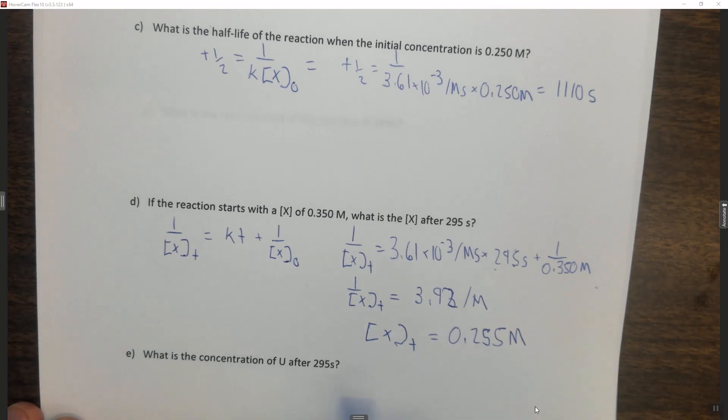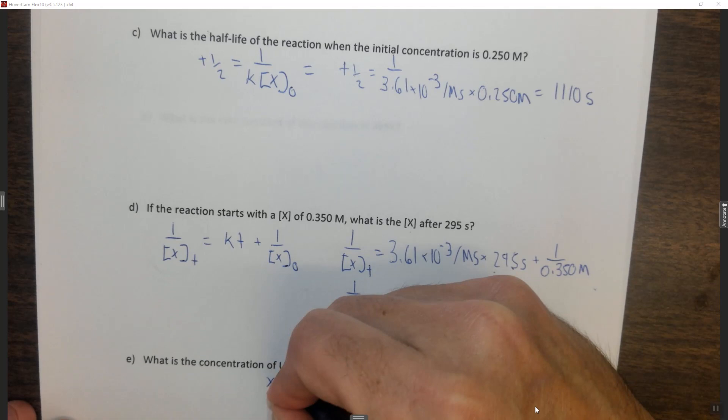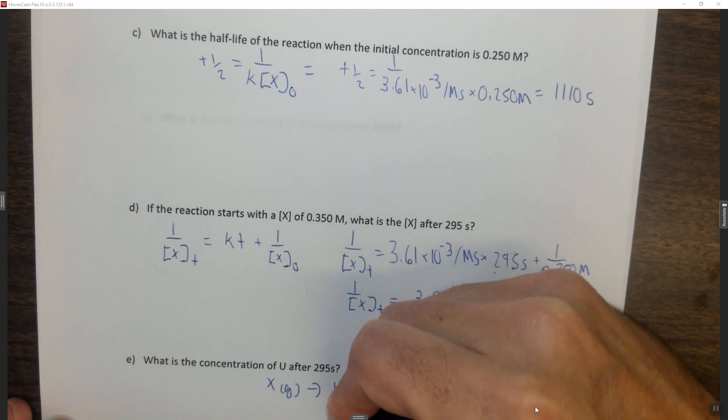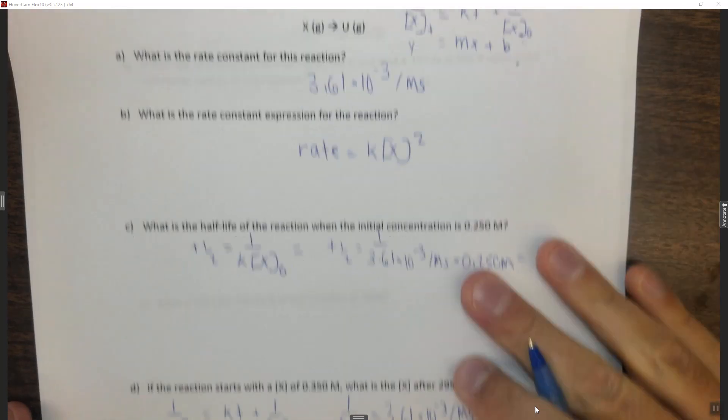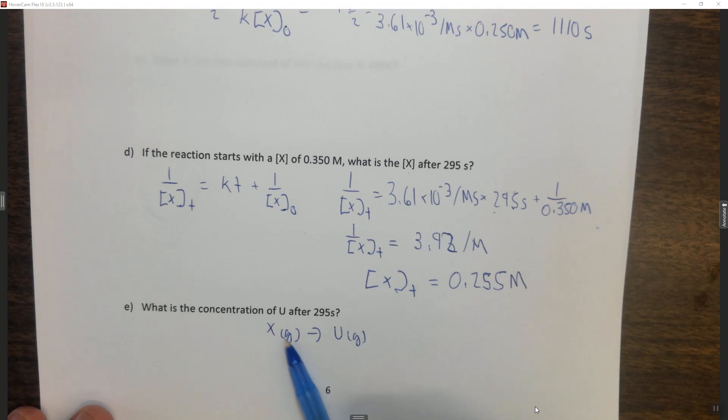So now if we look here it says what is the concentration of U after 295 seconds. And if we look up to the beginning we find that X gas yields U gas and they're one to one. So I'm just copying this down over here so we could see it. So this is one to one.